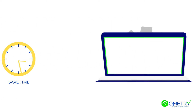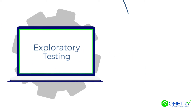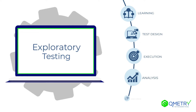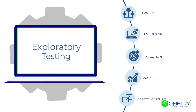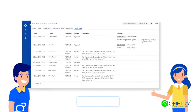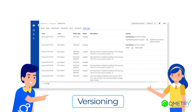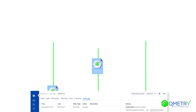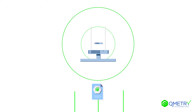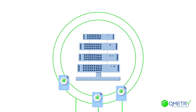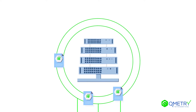Use the inbuilt exploratory testing feature to automate test case documentation. Versioning functionality enables teams to collaborate and manage multiple versions of test cases in parallel while retaining the integrity of data.